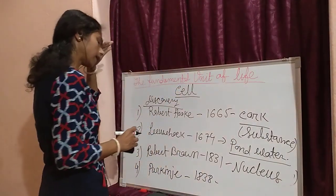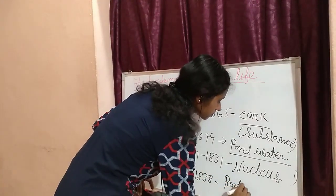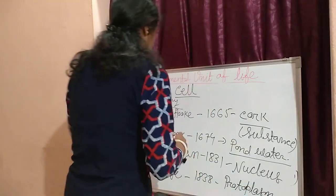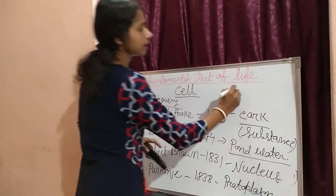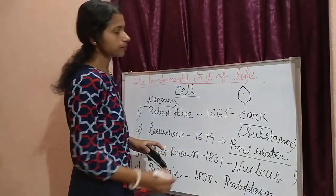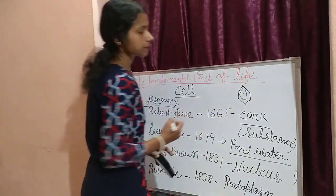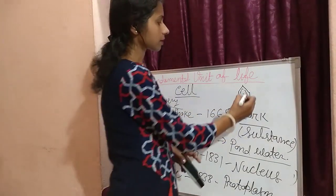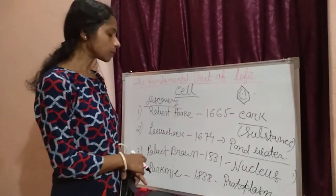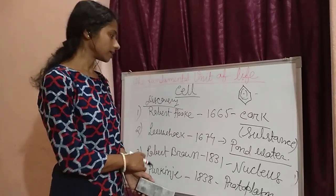After Robert Brown came Purkinje, in 1838 or 1839, who gave the idea about protoplasm. In a cell we know that the nucleus is there, but there are some generalized substances present in the cell — these are called protoplasm. This protoplasm idea was given by Purkinje in the year 1839.